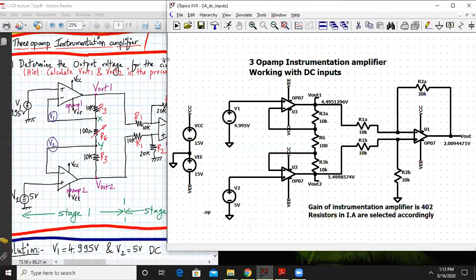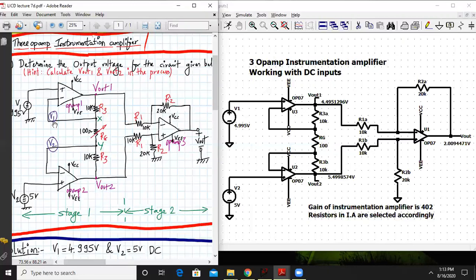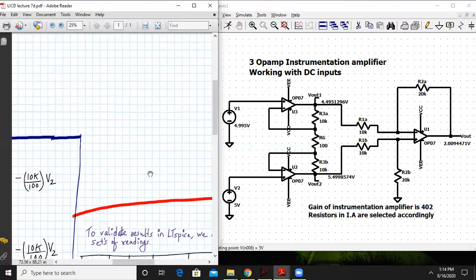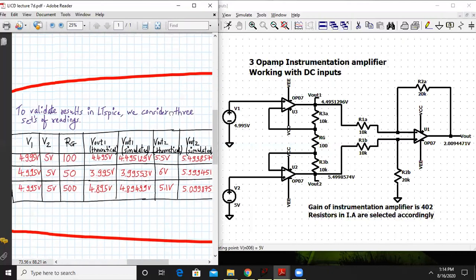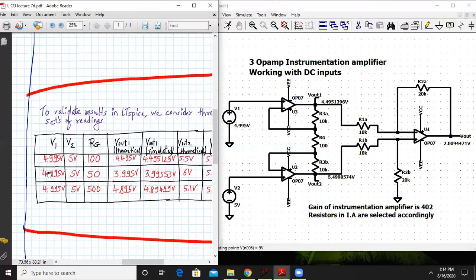As you can see the circuit to your left and the circuit to your right are one and the same. All the voltages, the resistances, the values, everything remains the same. This is 20k, 20k, 10k, 10k and everything is same. Now we have to evaluate for a number of combinations. We have V1 and V2 as 4.995 and 5 volts and RG is 100. So let us simulate this.